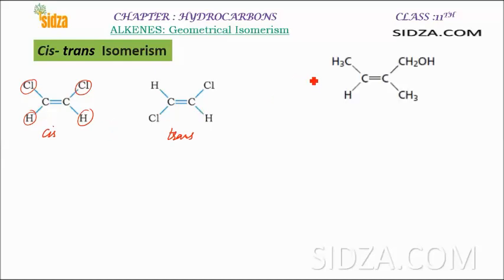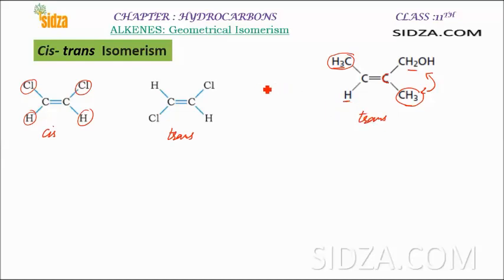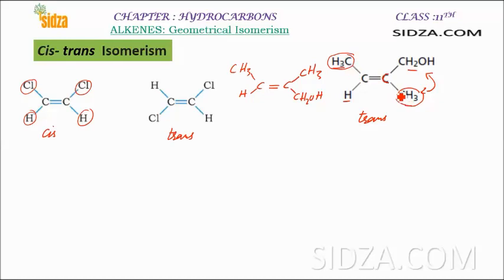Another example has methyl and hydrogen on one carbon, and CH₂OH and CH₃ on the other — all different groups, so geometrical isomerism is possible. Here the similar groups are on the opposite sides, making it the trans isomer. For the cis isomer of the same molecule, if we put CH₃ on the same side as CH₃, those similar groups are on the same side of the double bond — that is the cis isomer.